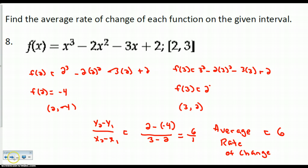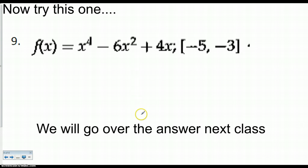So what I want you guys to do is find the average rate of change of f of x equals x to the 4th minus 6x squared plus 4x between the x values of negative 5 and negative 3. And we will go over those in class tomorrow. Talk to you later.